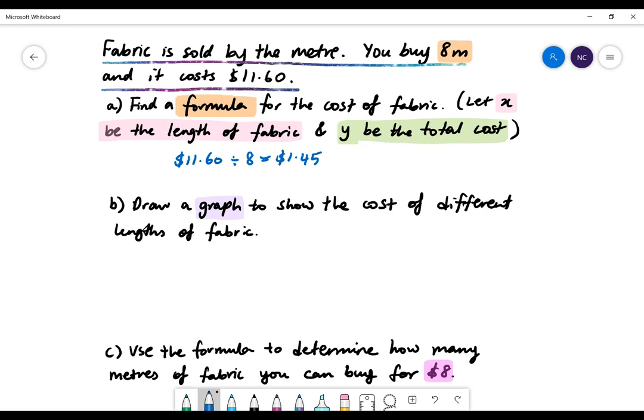To do our formula, we'll simply do the total cost is equal to $1.45 multiplied by the total length of fabric.